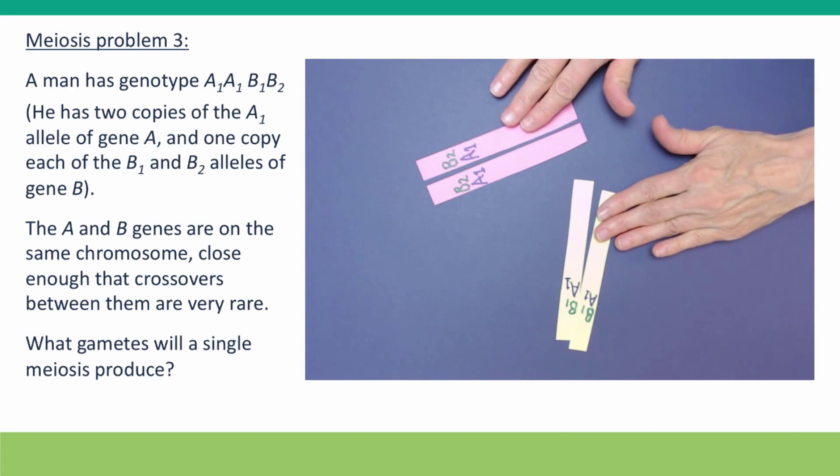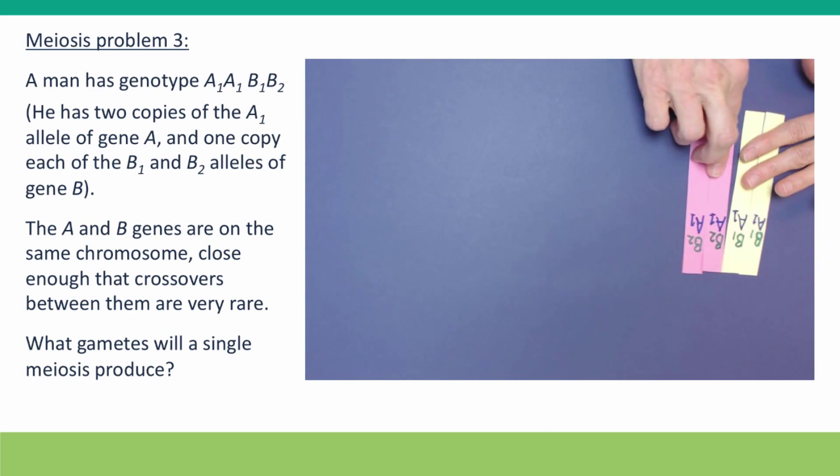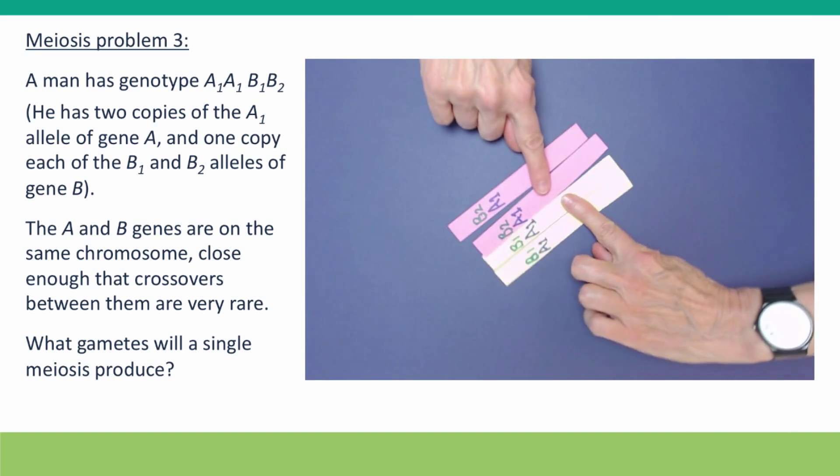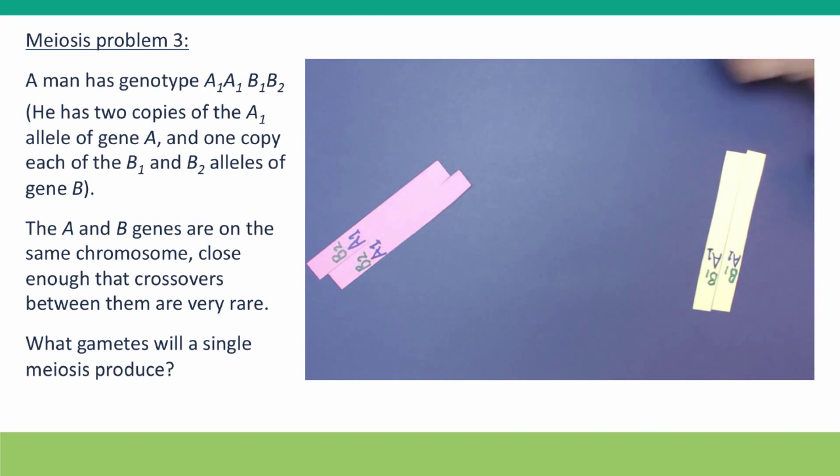As usual, it's always the same. The DNA replicates, the homologues bind each other, they move to the center of the cell, and they're pulled apart.